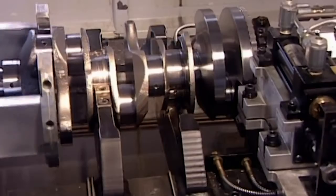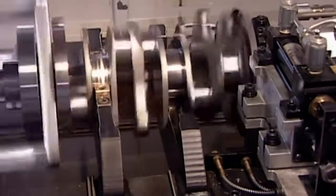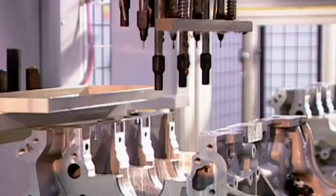Now workers balance the crankshaft. If it's off kilter, the engine will vibrate. A computer analyzes the spin and determines whether they need to drill out metal at certain points to achieve equilibrium.